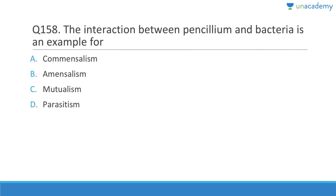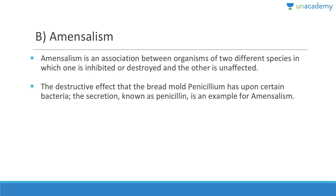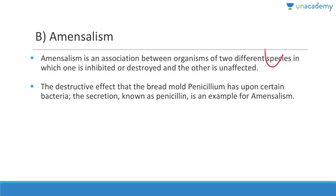The interaction between Penicillium and bacteria is an example of amensalism. Penicillium is a fungus that produces penicillin, an antibiotic. The fungus is not affected in any way, but bacteria get killed. Amensalism is an association where one organism is inhibited or destroyed while the other is unaffected.